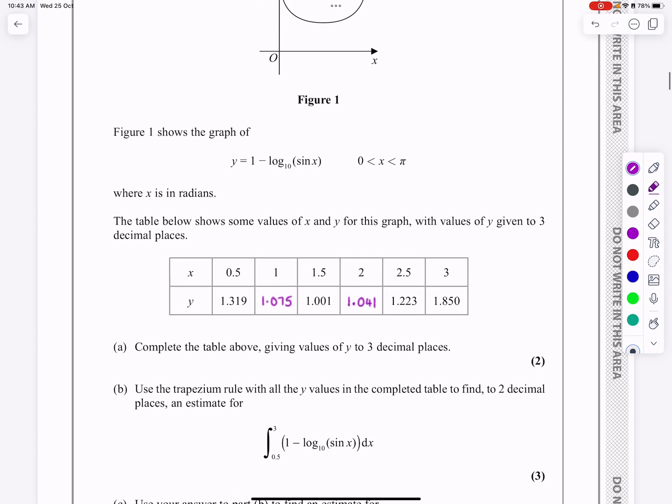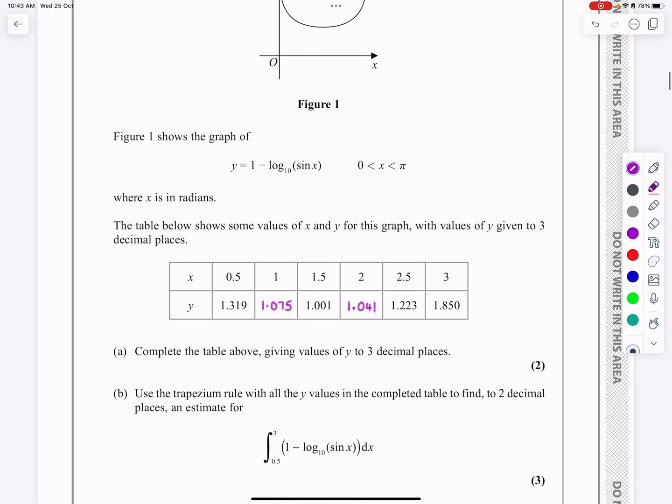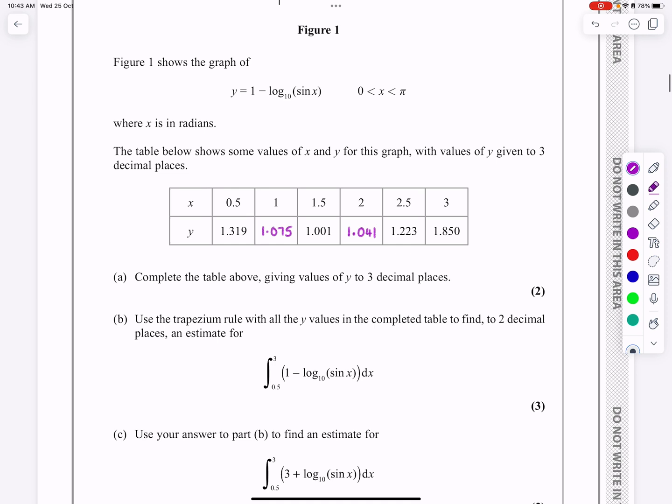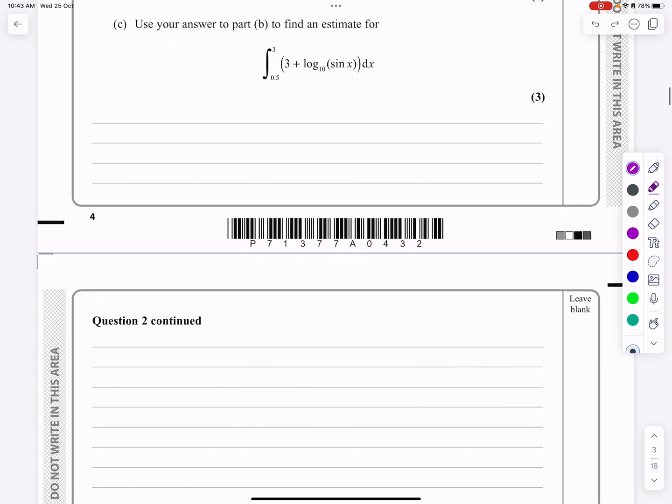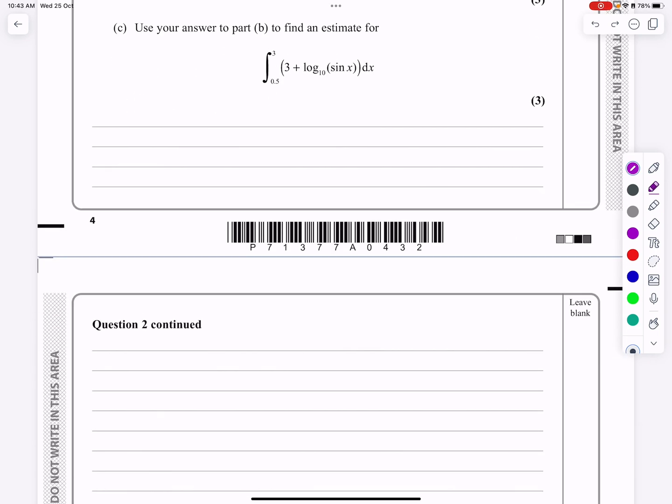Part b then says use the trapezium rule with all the y values in the completed table. Find the answer to two decimal places, so just checking that there's no hidden bits here. We're going between 3 and 0.5, and we're finding an estimation for the integral of that function. So yes, absolutely straightforward.